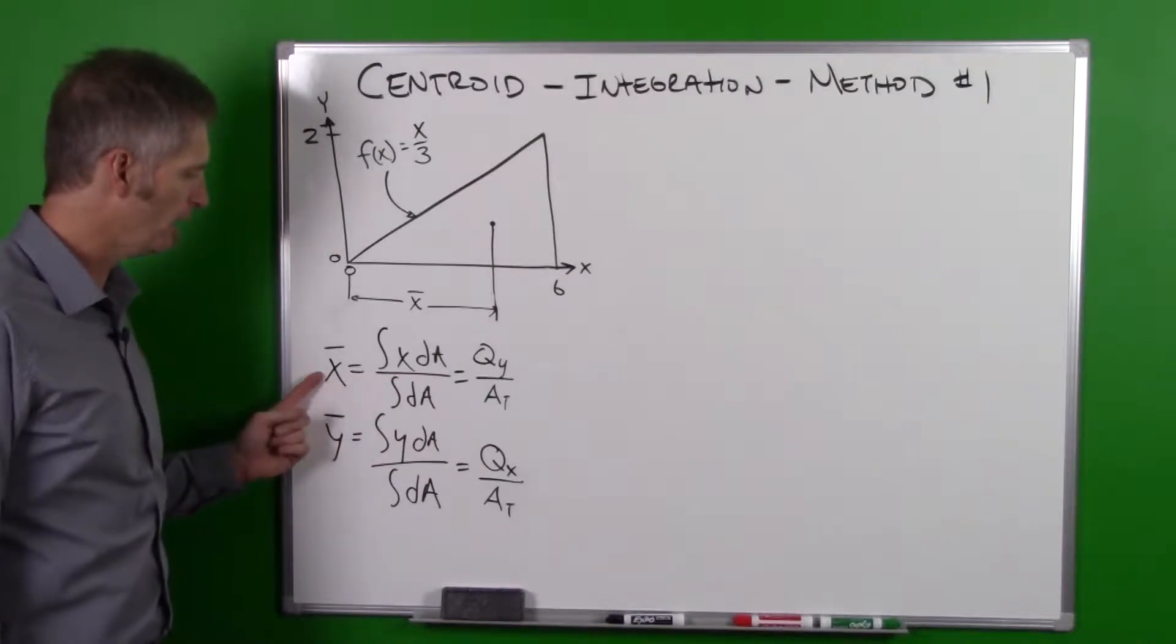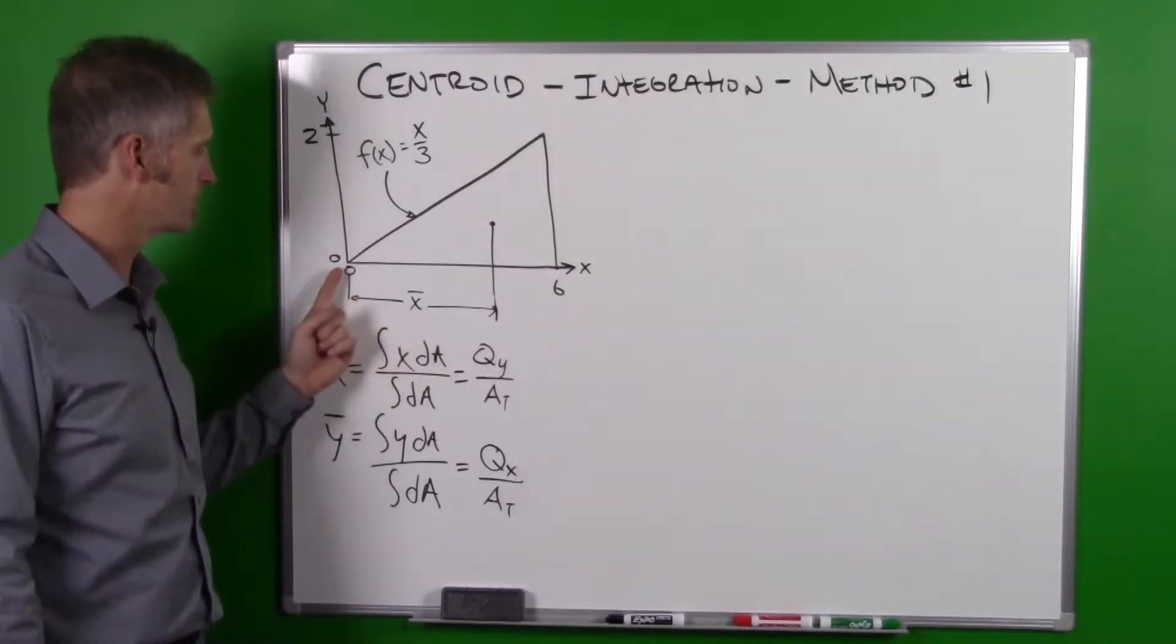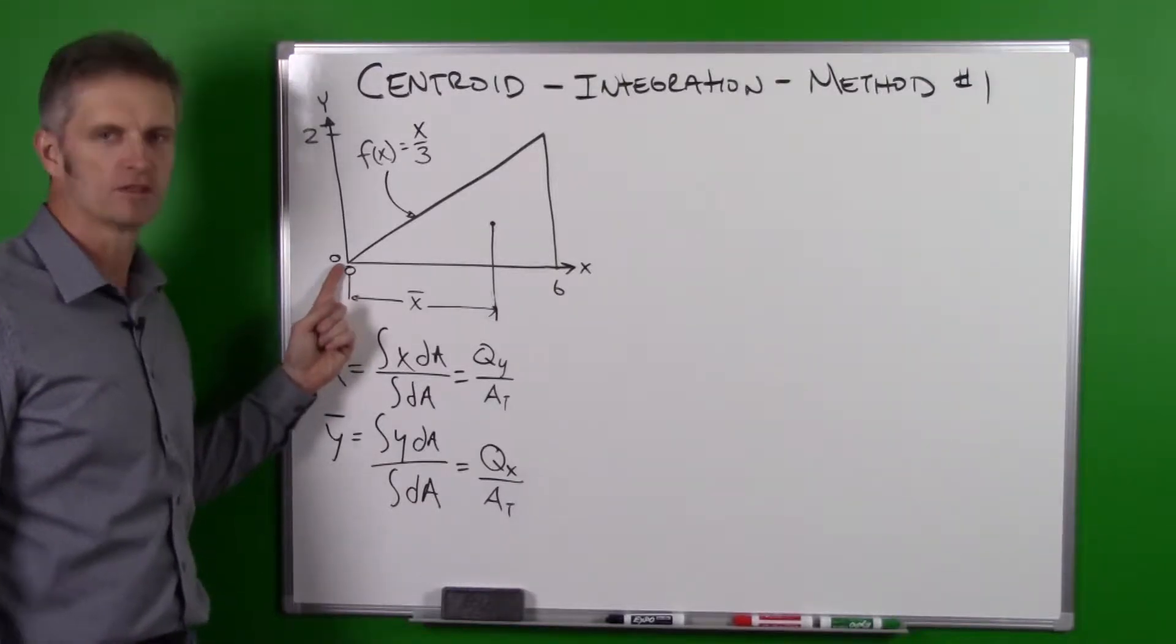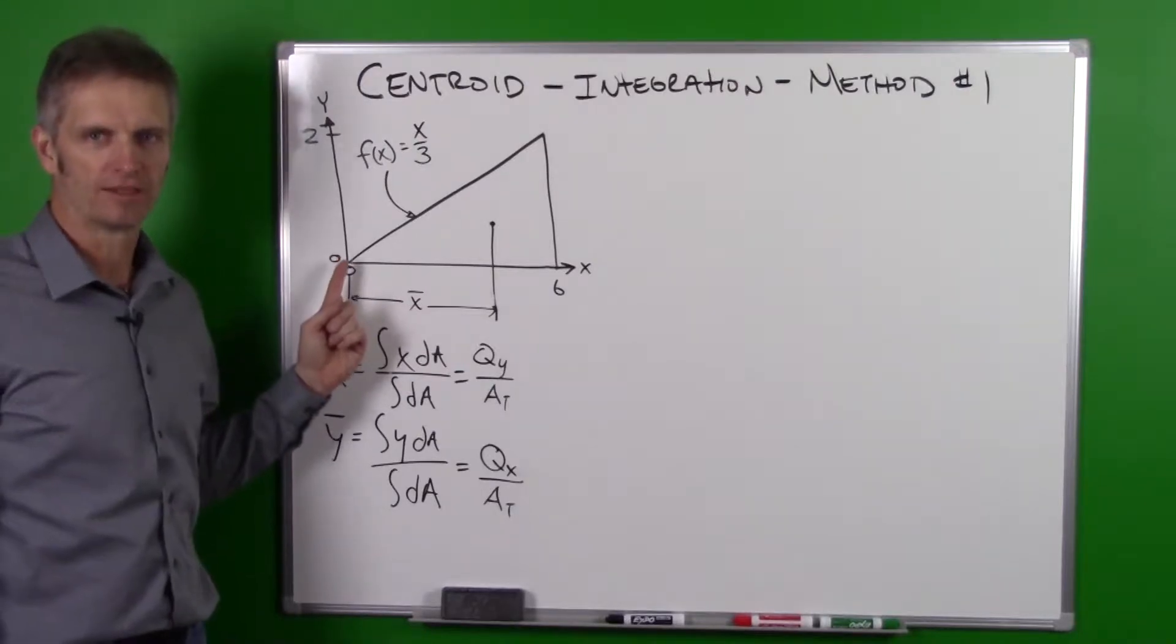Centroid is x bar and y bar. In this case I've set up the coordinate system such that the coordinate system origin is at the point of our triangle on the left hand side.